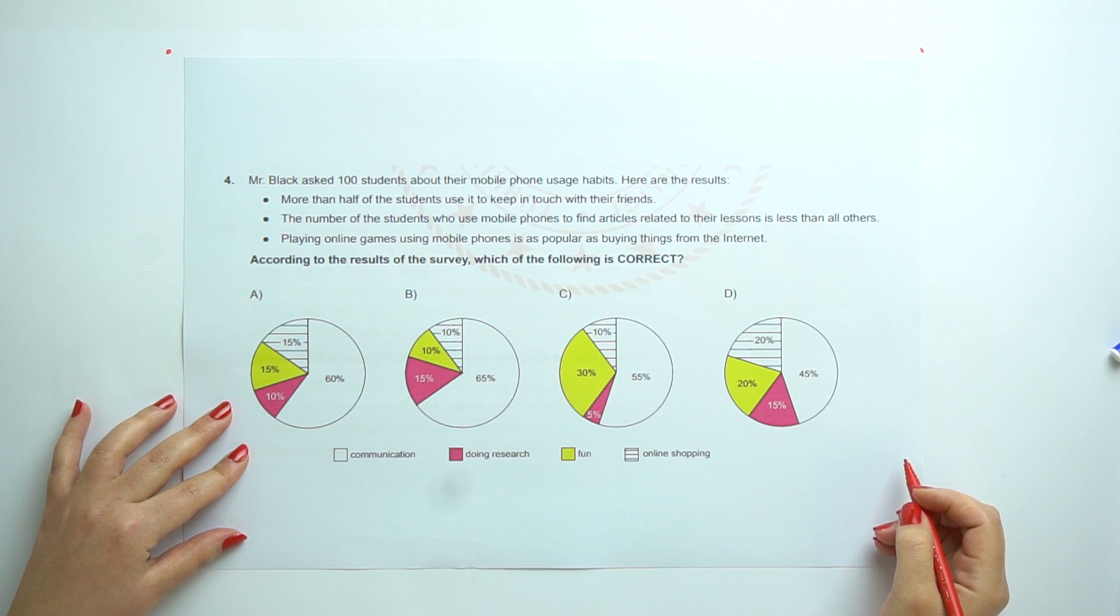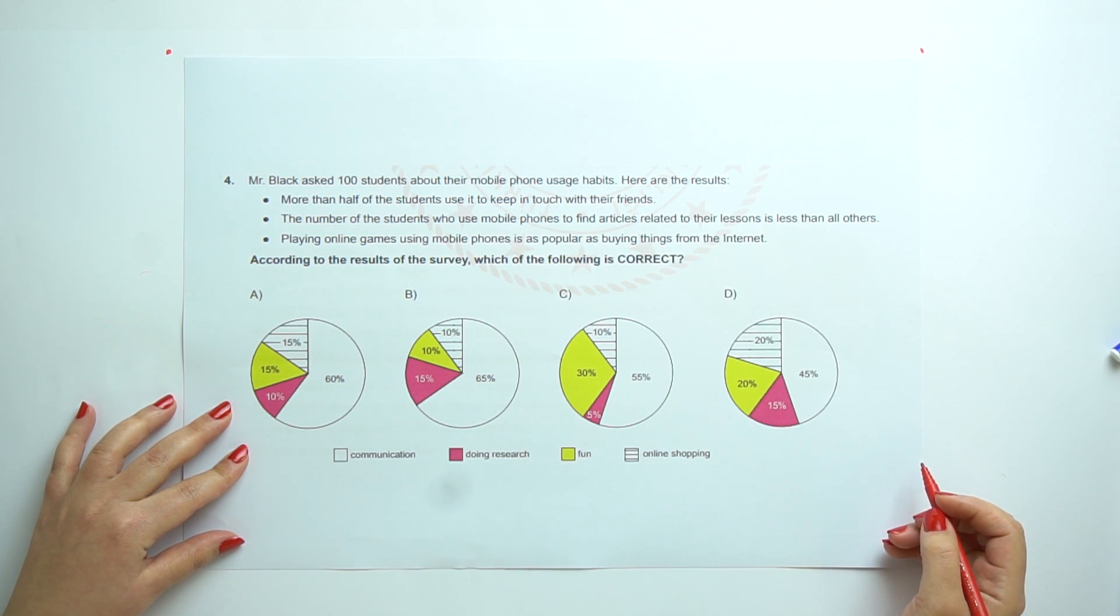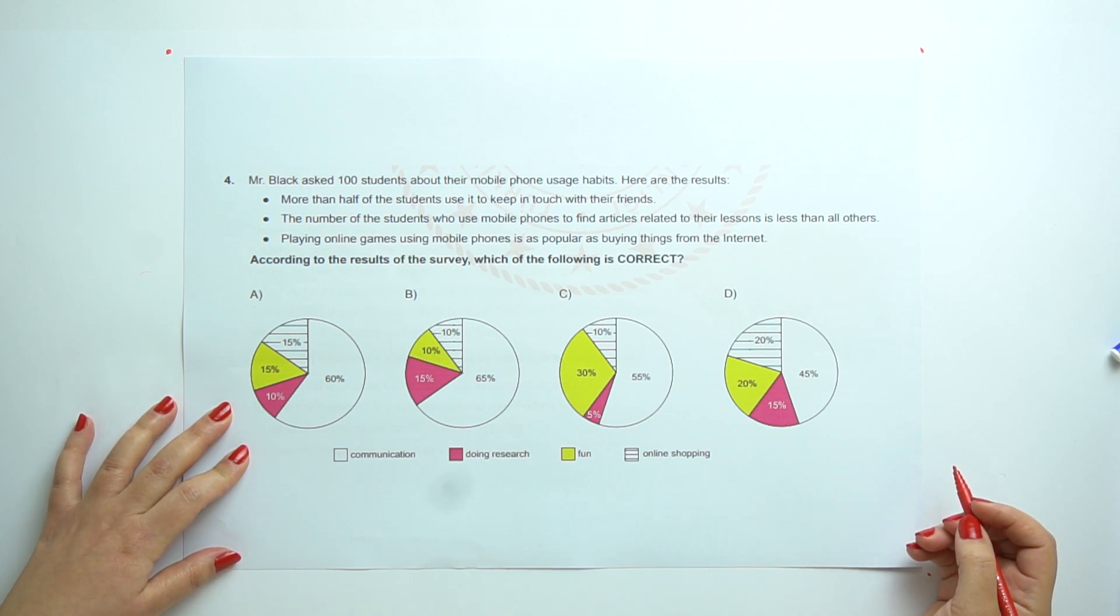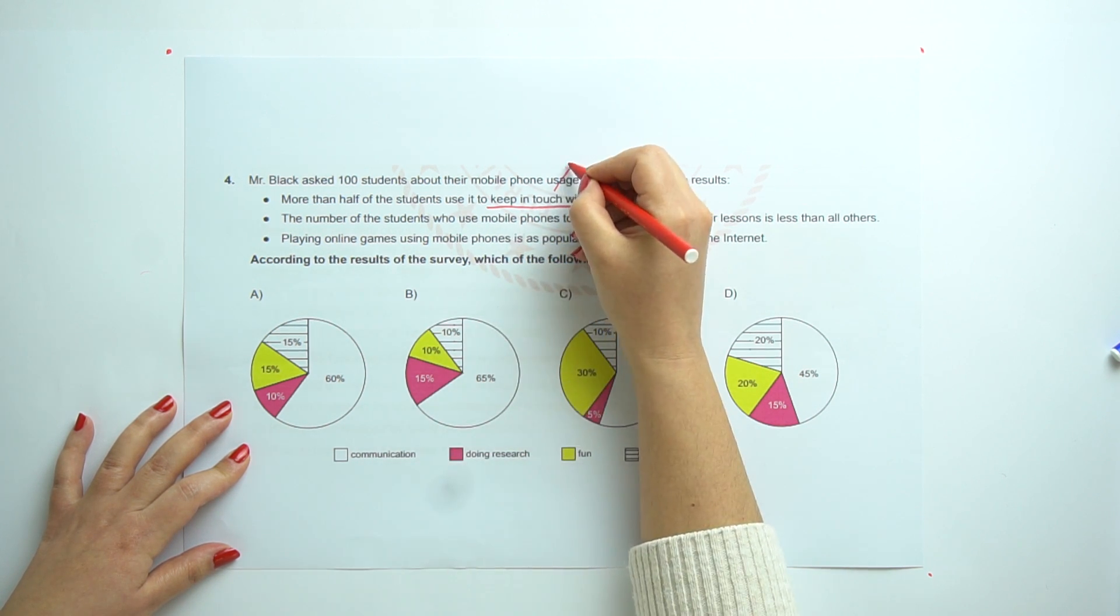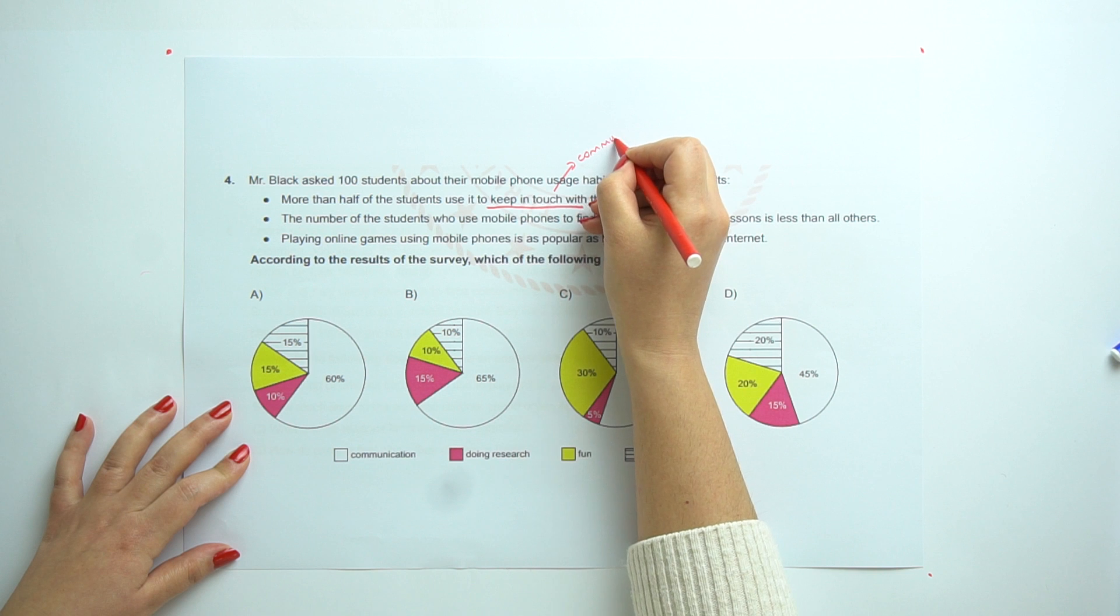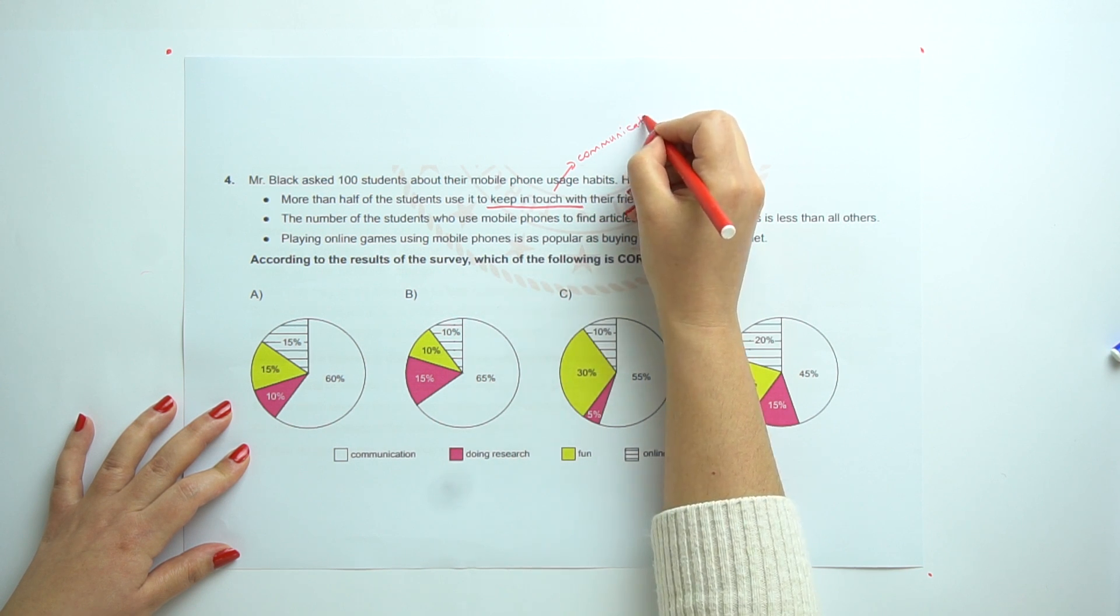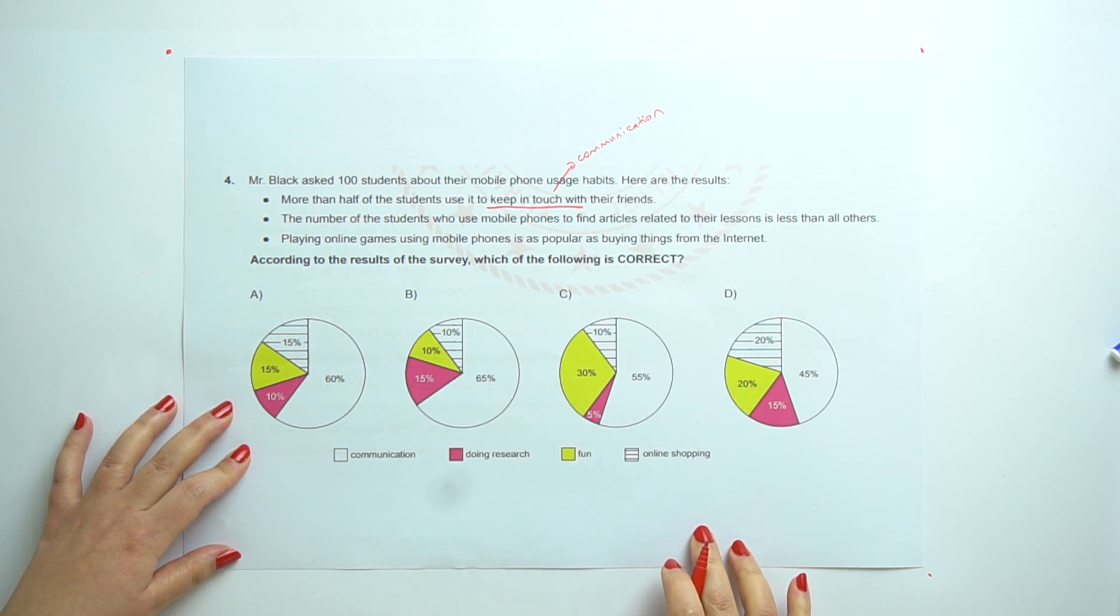Mr. Black asked 100 students about their mobile phone usage habits. Here are the results. More than half of the students use it to keep in touch with their friends. Keep in touch with this is. That means communication.